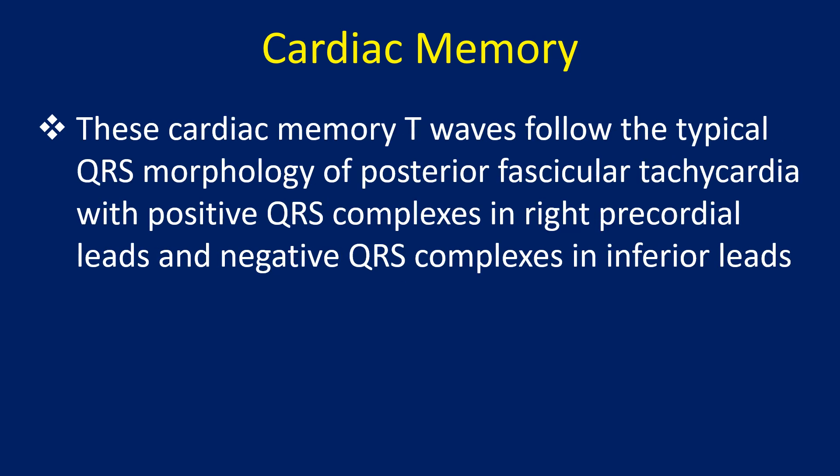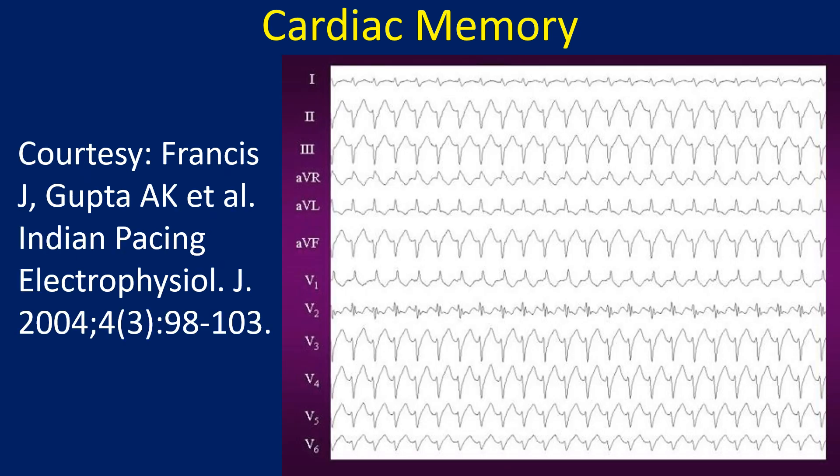These cardiac memory T waves follow the typical QRS morphology of posterior fascicular tachycardia, with positive QRS complexes in right precordial leads and negative QRS complexes in inferior leads. Posterior fascicular tachycardia shows positive QRS in V1 and negative QRS in inferior leads.